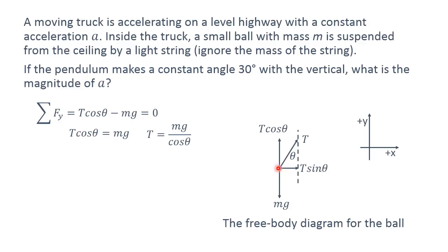With a little bit of algebra, you get T cosine theta equal to mg, then you divide cosine theta over, and you get T equal to mg divided by cosine theta.